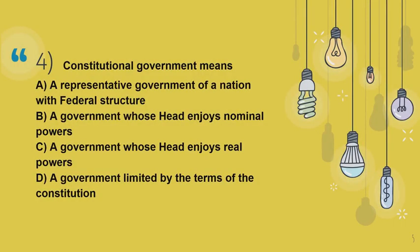Moving to Question 4: Constitutional government means? Again a straightforward question. We can simply evaluate the four options and reach a logical conclusion: (A) a representative government of a nation with federal structure, (B) a government whose head enjoys nominal powers, (C) a government whose head enjoys real powers, (D) a government limited by the terms of the constitution. Constitutional government means a government limited by the terms of the constitution — other options are not of much relevance. So the correct option is Option D.